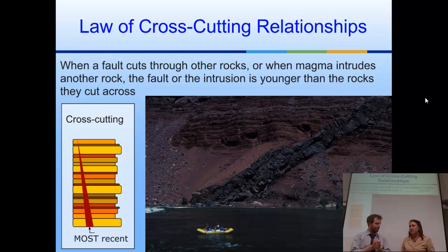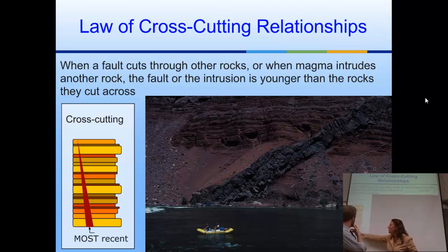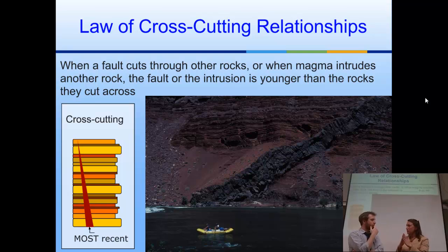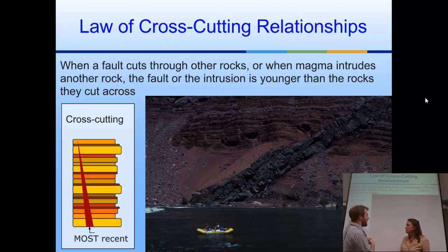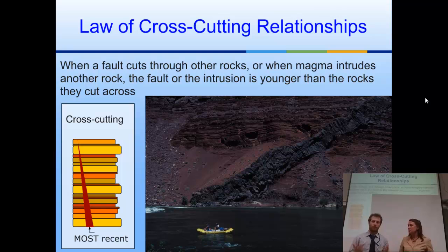The Law of Cross-Cutting Relationships: here we have a stack of rock layers with the oldest at the bottom and youngest on top, and cutting across all of them is that arrow-shaped triangle. For that feature to have cut across, those other layers had to already be stacked up. It's like when you rip a piece of paper — the paper had to be there first, then the rip. So when a fault cuts through other rocks or magma intrudes another rock, the fault or intrusion is younger than the rocks it cuts across.